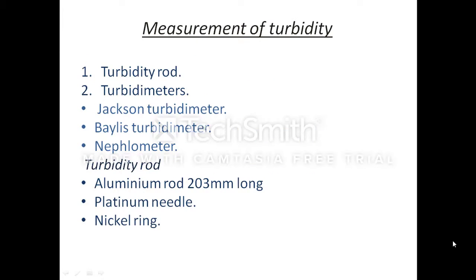Now the measurement of turbidity. How can turbidity be measured? It can be measured either by a turbidity rod or by turbidimeters. The three types of turbidimeters are the Jackson Turbidimeter, Bayless Turbidimeter, and Nephelometer. Now starting with the turbidity rod.